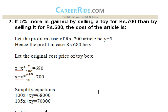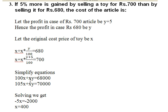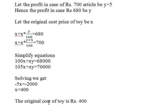Question 3: If 5% more is gained by selling a toy for rupees 700 than by selling it for rupees 680, what is the cost of the article? We assume the profit in the case of 700 is y+5 and the profit in the case of 680 is y. Let the cost price be x. Then x + x×y/100 = 680 and x + x×(y+5)/100 = 700. Simplifying: 100x + xy = 68,000 and 105x + xy = 70,000. Solving these two equations gives x = 400. The original cost of the toy is rupees 400.